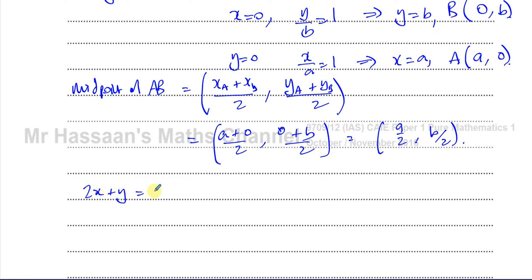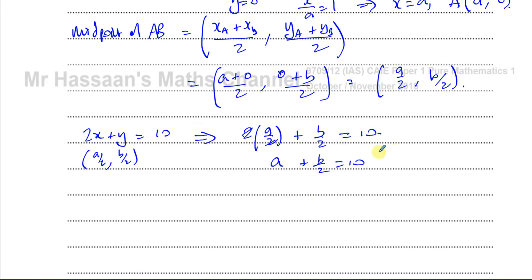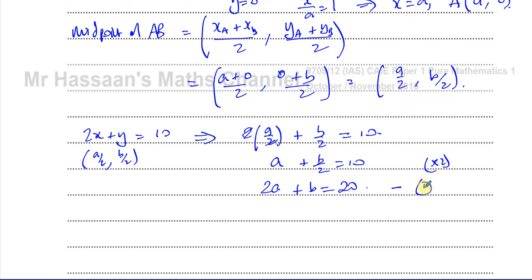Since the midpoint (a/2, b/2) lies on the line 2x + y = 10, it must satisfy that equation. Substituting x = a/2 and y = b/2 gives 2×(a/2) + b/2 = 10, which simplifies to a + b/2 = 10. Multiplying both sides by 2 gives equation 1: 2a + b = 20.